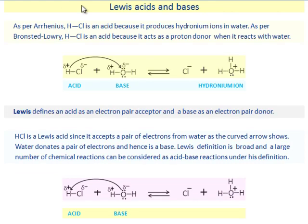Lewis acids and bases. As per Arrhenius, HCl is an acid because it produces hydronium ions in water. As per Bronsted-Lowry, HCl is an acid because it acts as a proton donor when it reacts with water. Lewis defines an acid as an electron pair acceptor and a base as an electron pair donor.